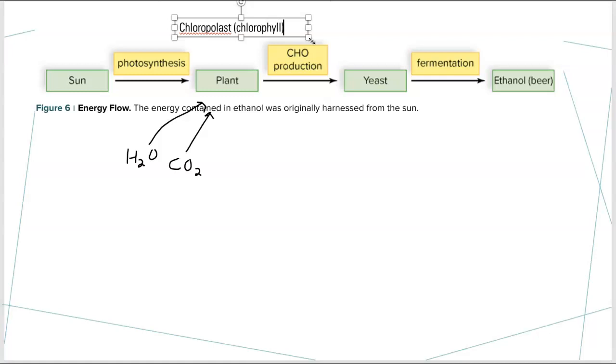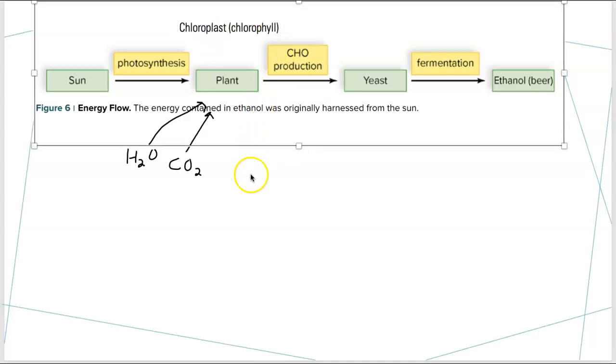The green parts of the plant run photosynthesis. The chloroplast is the structure, and it's got that green pigment called chlorophyll in it. Chloroplast is the structure. Chlorophyll is the primary green pigment that has to be present in order for the plant to run photosynthesis efficiently.